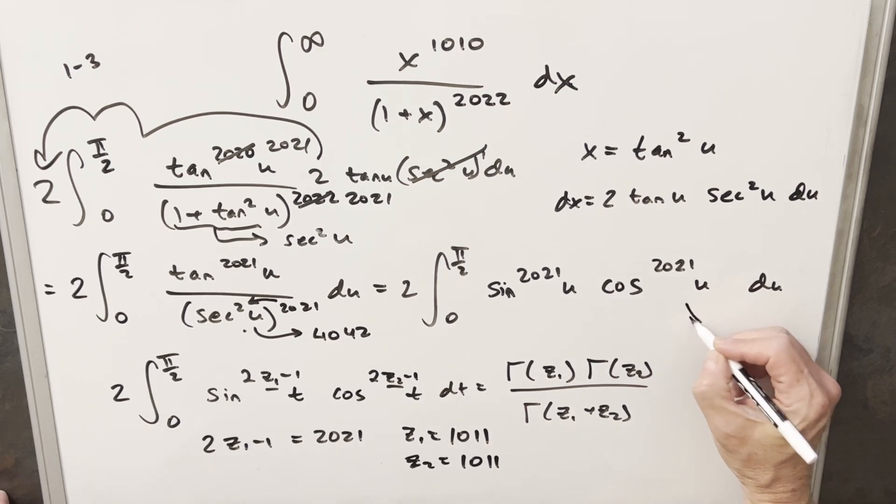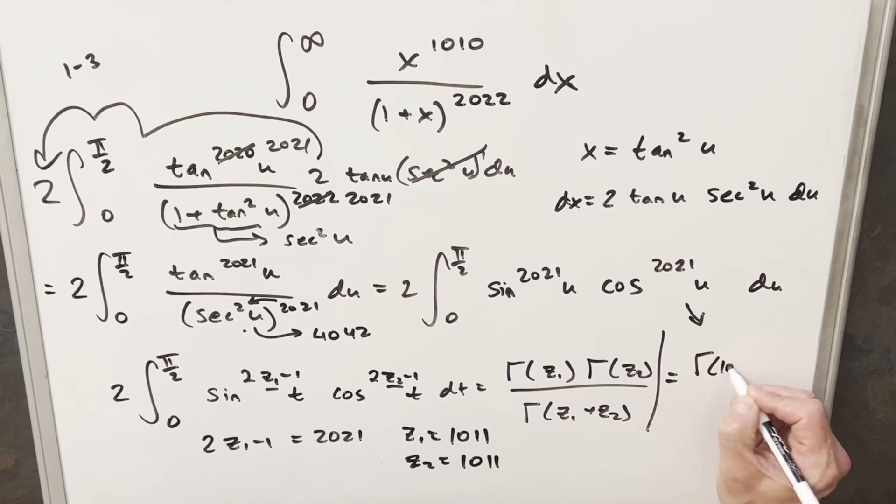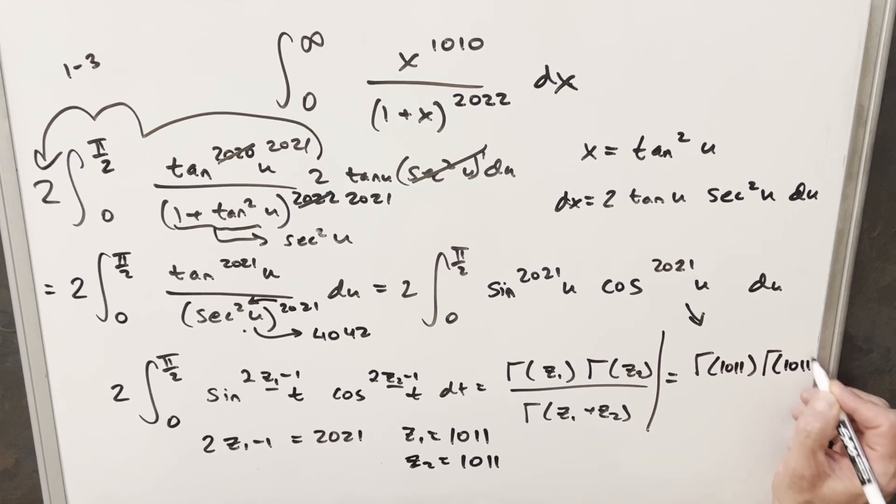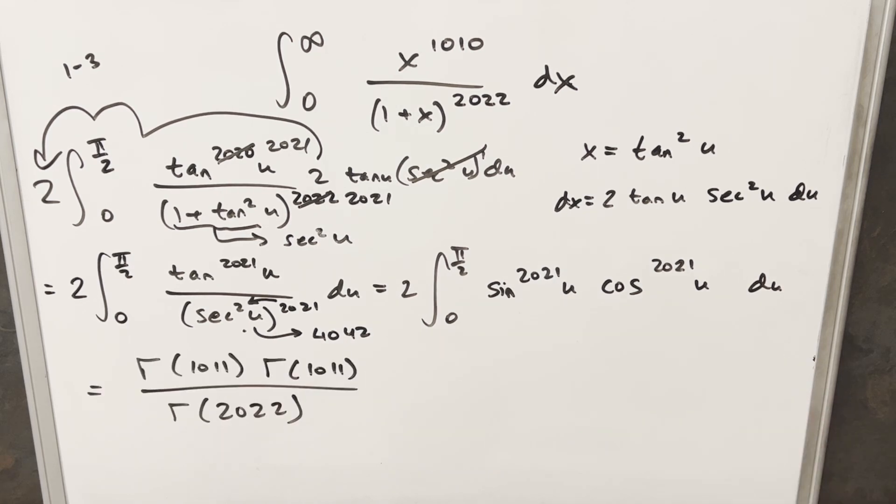And so you can see for this formula here, these are the only two values we need. So for our integral here, to get that in the same form, let's go down here. So just lining it up, we're going to have our solution in the form of gamma of z1, which is 1011, times gamma of z2, which is again 1011. And it's going to be all over the gamma function of these two added together, which is just going to be 2022.